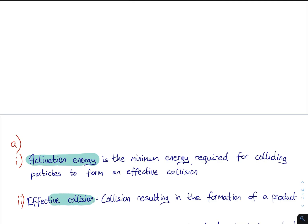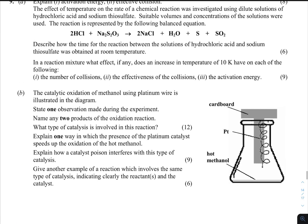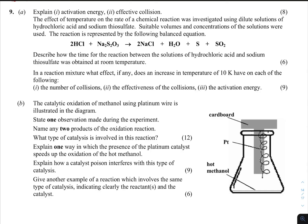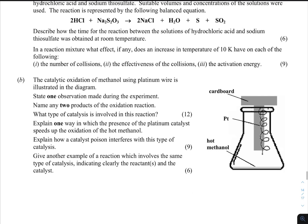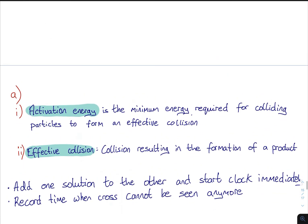Explain activation energy and effective collisions. Activation energy is the minimum energy required for colliding particles to form an effective collision. An effective collision is a collision that results in the formation of a product. So it doesn't matter how many times those reactants collide - if they do not have enough energy, it is not going to be an effective collision and therefore they would not form a product.